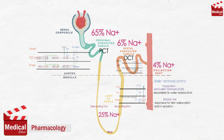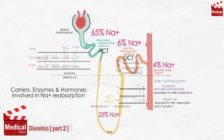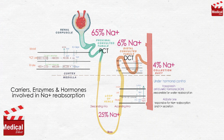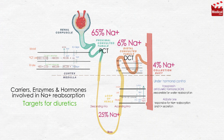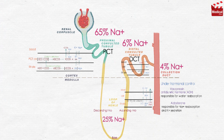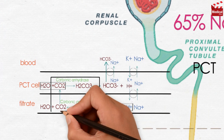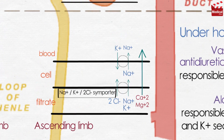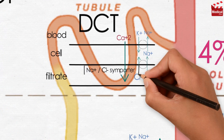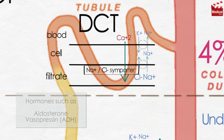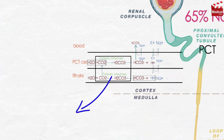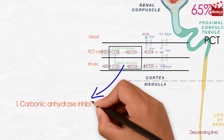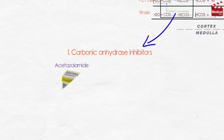From the previous lecture we know that there are some important carriers, enzymes and hormones involved in sodium reabsorption. They are the targets for different kinds of diuretics, such as carbonic anhydrase enzyme, sodium-potassium-2-chloride importer, sodium and chloride importer, and hormones such as aldosterone and vasopressin. The first category we'll discuss is the carbonic anhydrase inhibitors, such as acetazolamide.